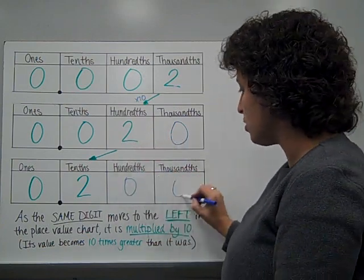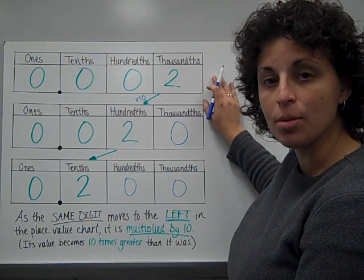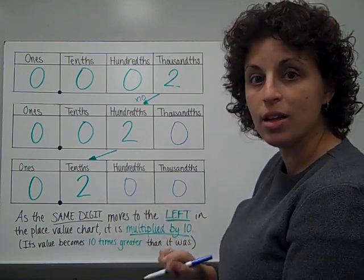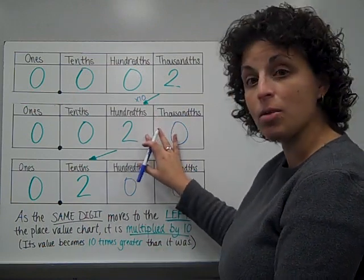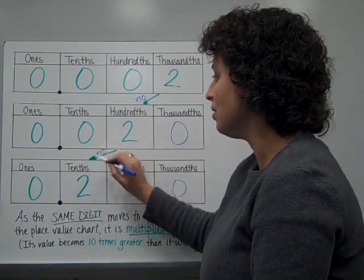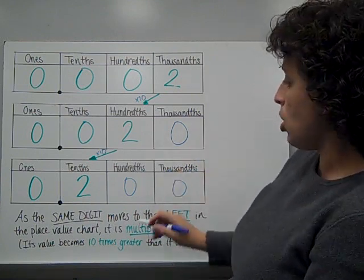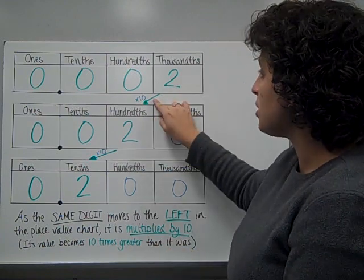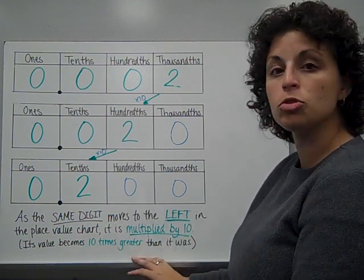If I fill in these empty place values — because I had zero and two tenths — and go ahead and fill it into thousandths so that it goes to the same place value as my smallest decimal, then now I see two hundred thousandths. When I was talking about the hundredths place a second ago, I had twenty; now I have two hundred. Twenty times ten would get me the two hundred thousandths that I have now. So, as you move the same digit to the left in the place value chart, it is multiplied by ten — every time you move a place value, it's multiplied by ten again, and its value becomes ten times greater.